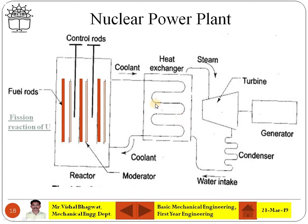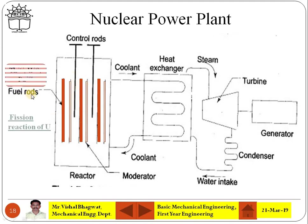One must understand what is exactly happening inside the nuclear reactor core. Inside the reactor core there are fuel rods — the nuclear material. Then there are moderators and control rods. The fuel rods may be thorium, uranium, or plutonium, but the commonly used nuclear material is the uranium-235 isotope.